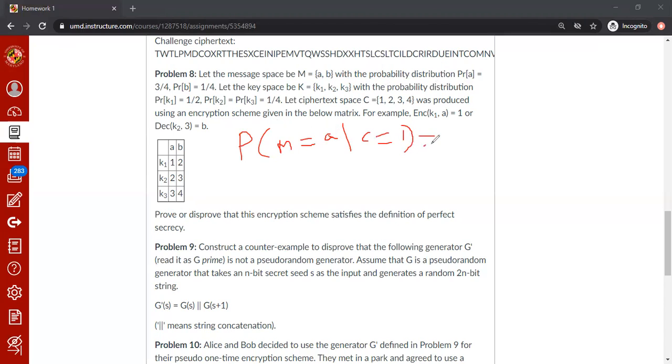I will use the Bayes theorem, which we talked about earlier, is probability of c being 1, given that message being a, times probability of message being a, divided by probability of c being 1. So what are the things we know so far? We know this. Probability of message being a is given to us is 3 fourths.